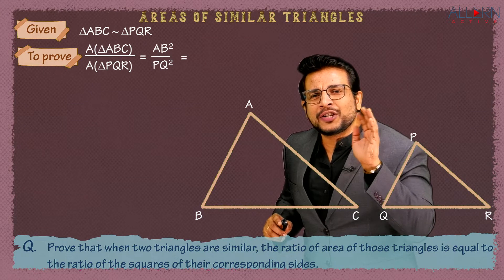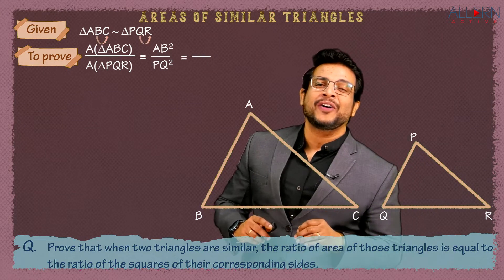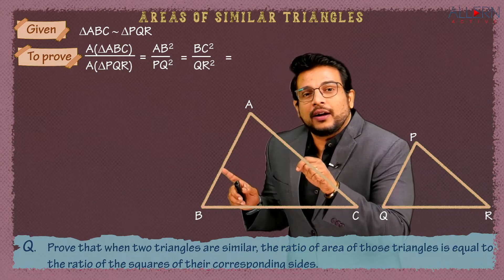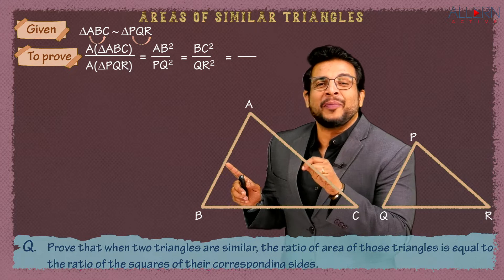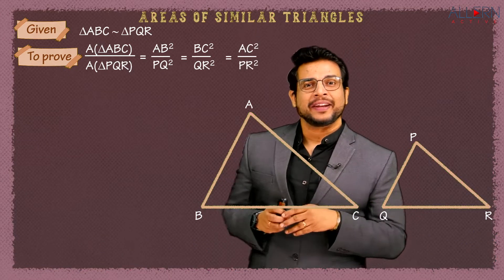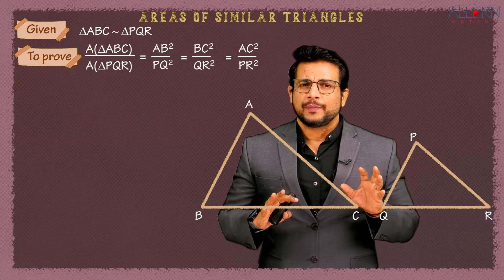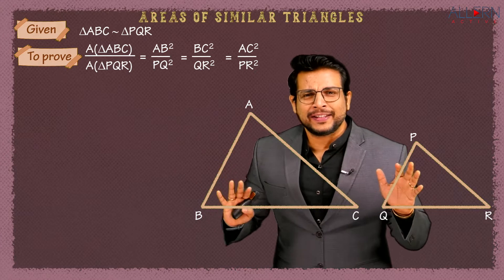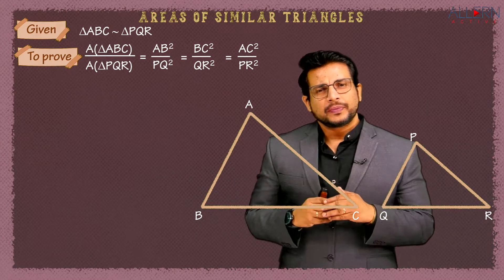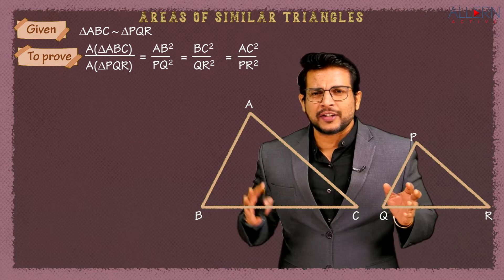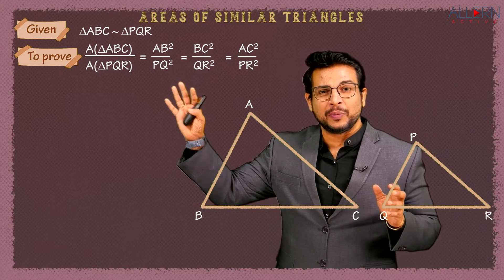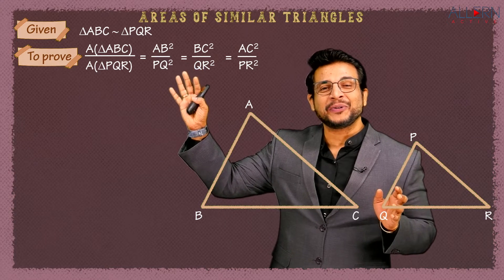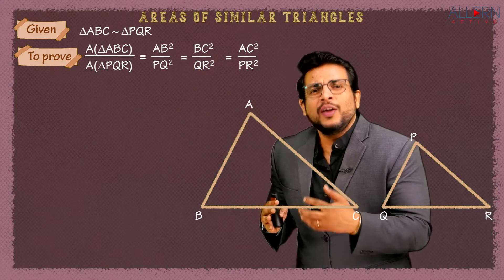That is also equal to BC² upon QR², which is also equal to AC² upon PR². So we have understood what to draw, what to write in the Given, and what to write in the To Prove. For the figure we get half a mark, and for the Given and To Prove another half mark — so one mark total by now.